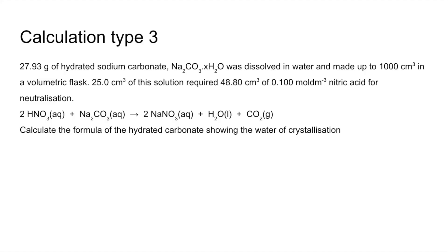So finally, there's the titration example. They've taken 27.93 grams of hydrated sodium carbonate and dissolved it in water and made it up to 1000 cm³. And then they've taken 25 of that and done the titration on it using that volume and concentration of nitric acid. Essentially, we're going to calculate the MR of this and then take off what we know and work out how many waters must be making up what's left.